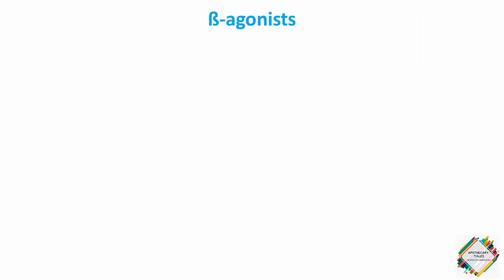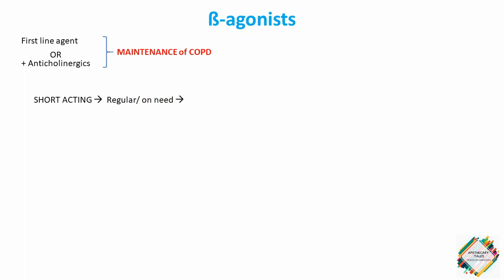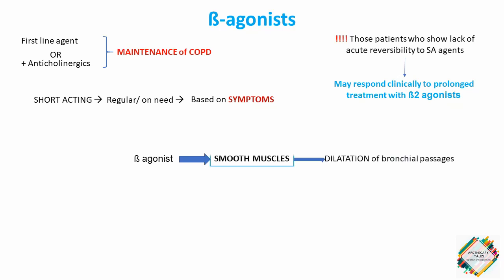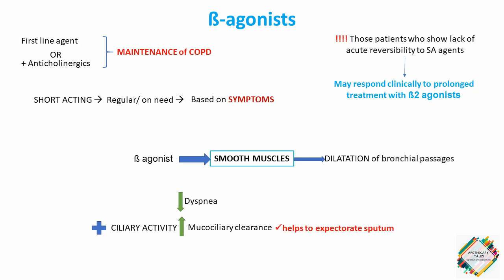Beta-agonists are very useful as first-line bronchodilators and are used in conjunction with anticholinergic agents in the maintenance treatment of COPD. Short-acting agents are used regularly or on an as-needed basis for symptoms. Some patients may respond clinically to prolonged treatment with beta-2 agonists even after demonstrating lack of acute reversibility to short-acting agents. Beta-agonists act on the smooth muscles of the lungs, causing dilation of bronchial passages, relieving dyspnea from airway obstruction, and increasing mucociliary clearance by stimulating ciliary activity.